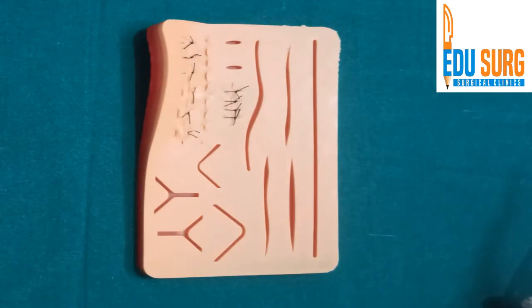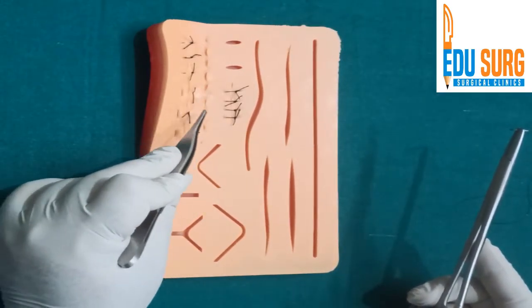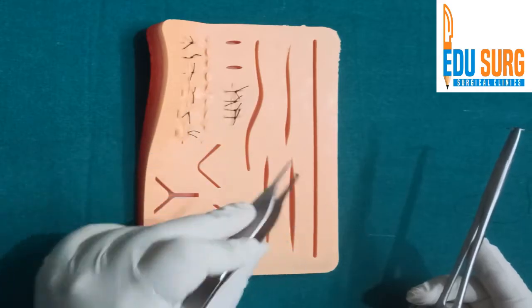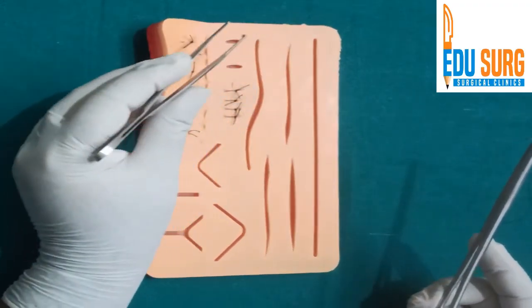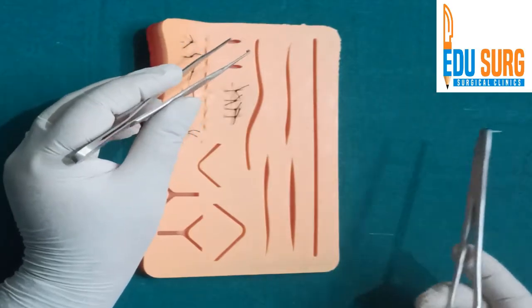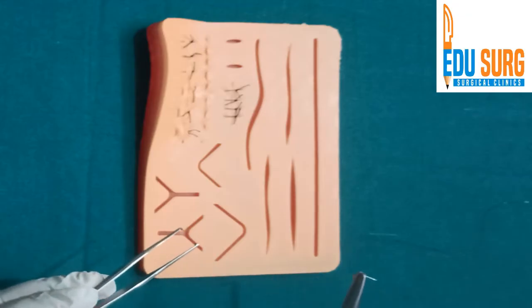Now an extension of horizontal mattress in continuous form is what is known as a Connell suture and that is commonly done in the anterior layer of intestinal anastomosis. So let us see how Connell is done. If you remember this horizontal suturing technique, Connell is going to be very easy for you. The mnemonic for it is outside in, inside out, outside in, inside out.